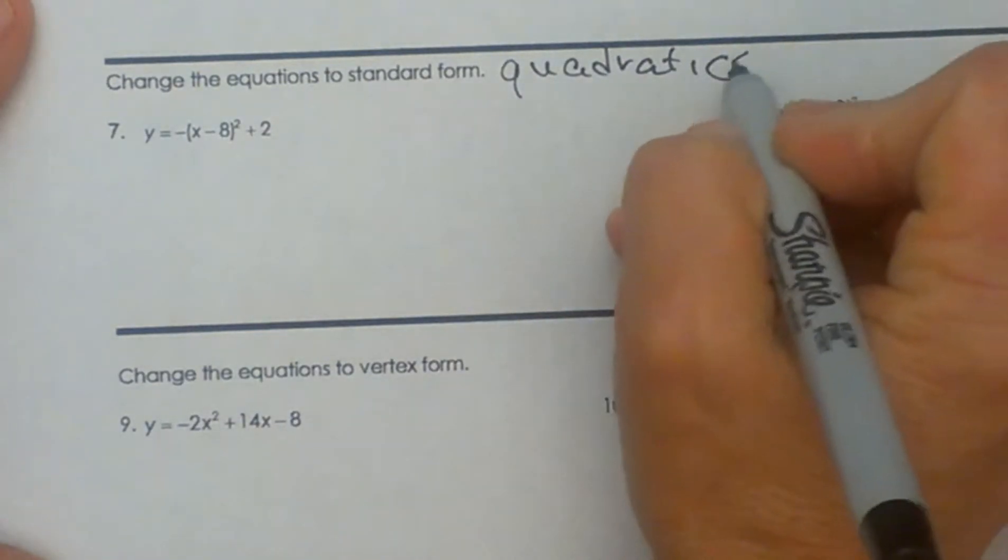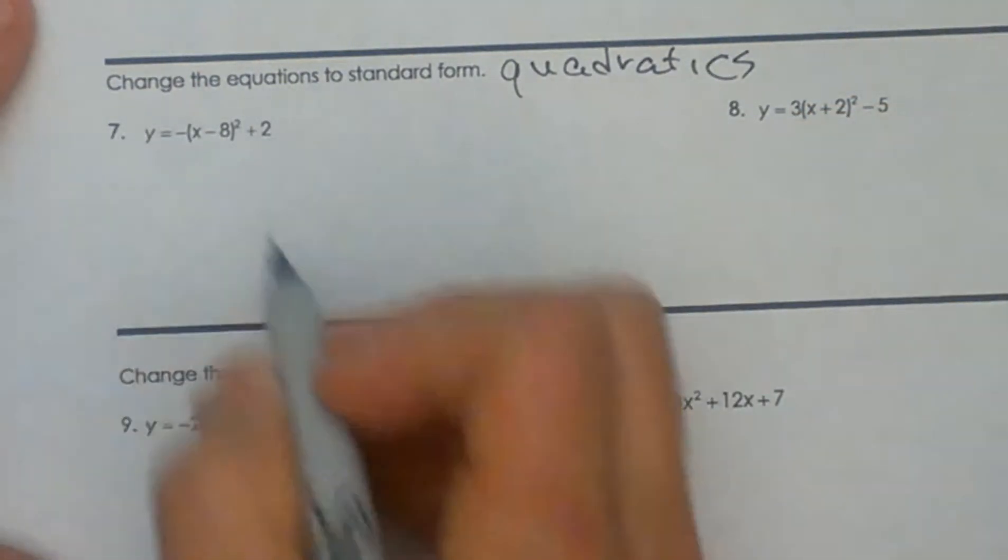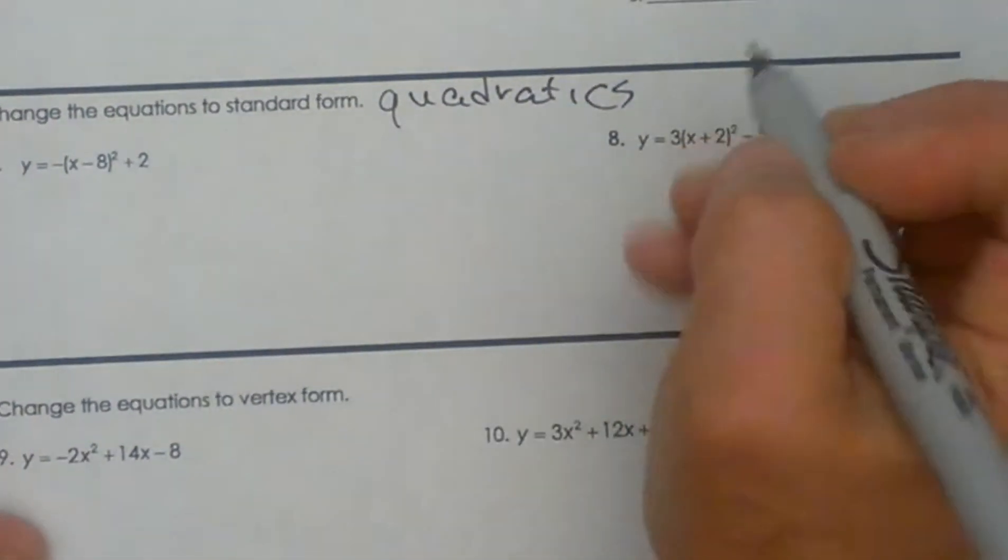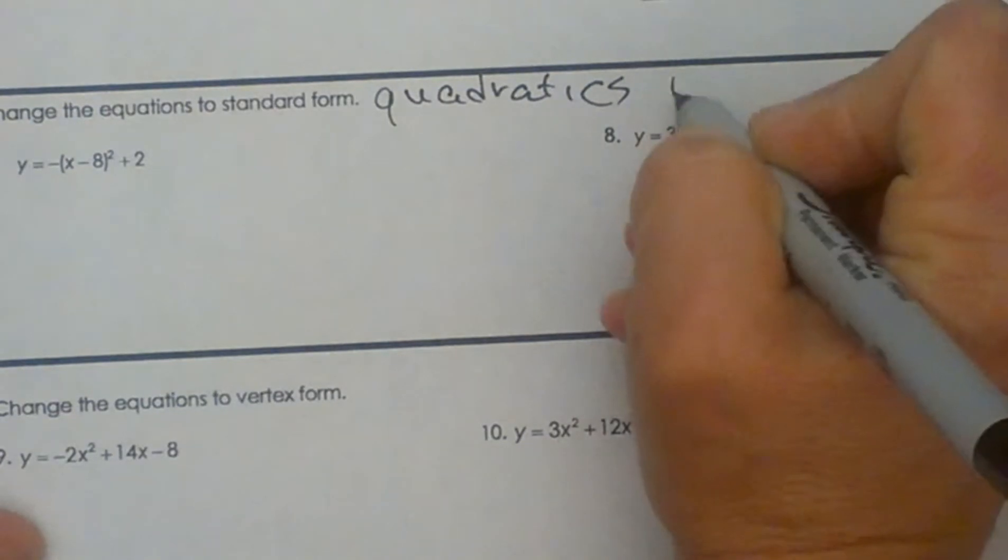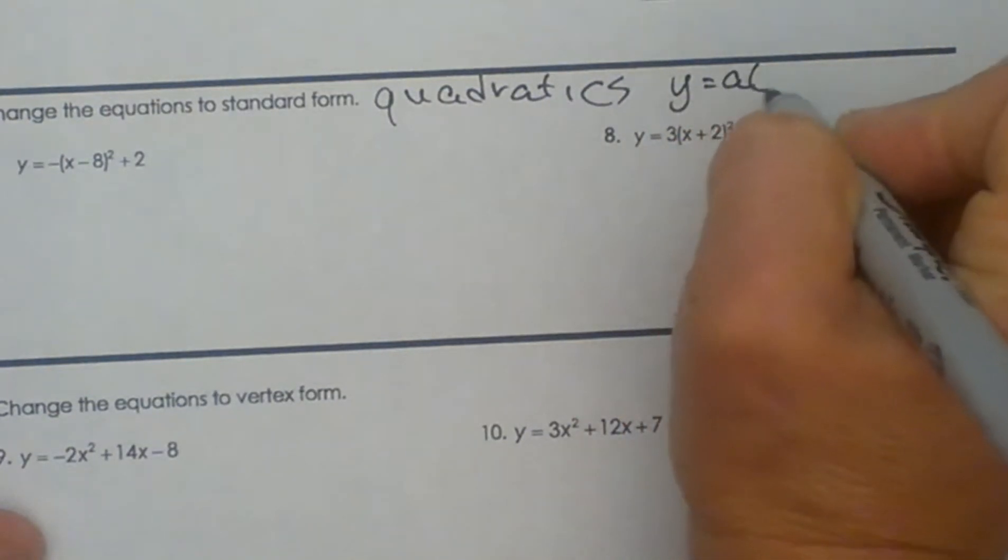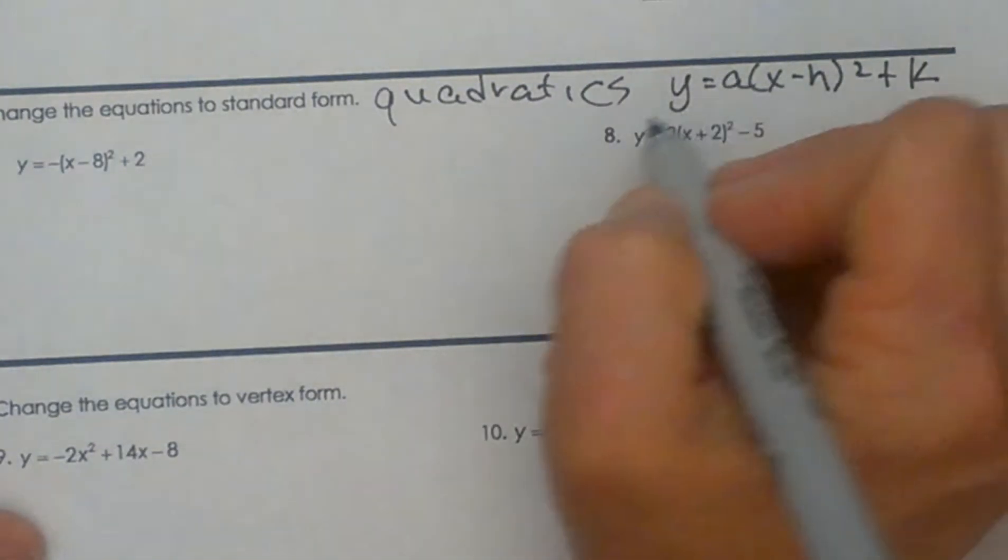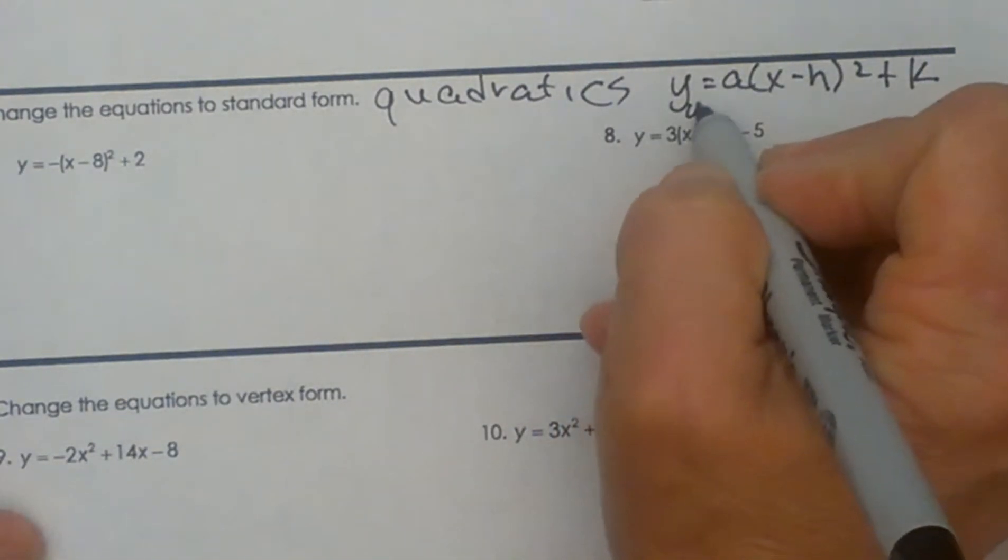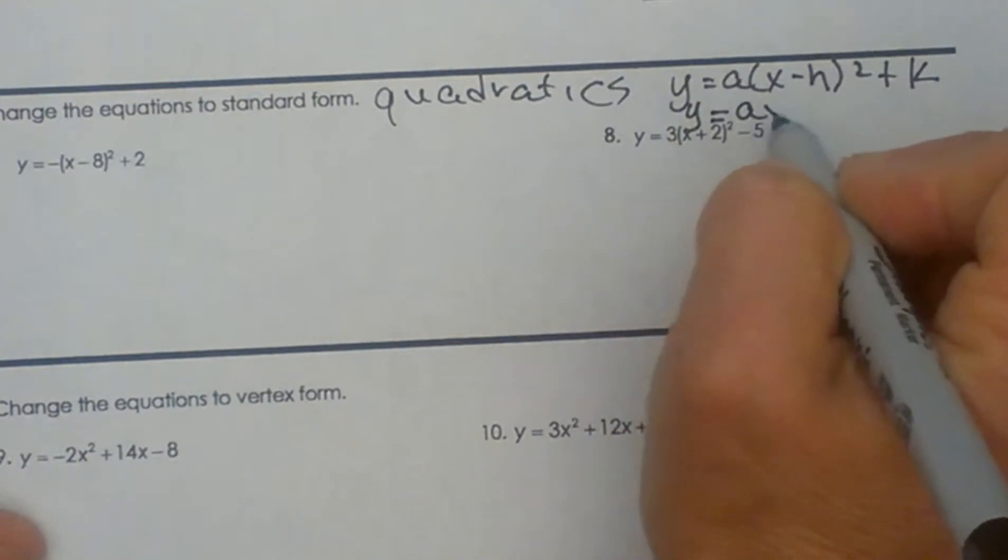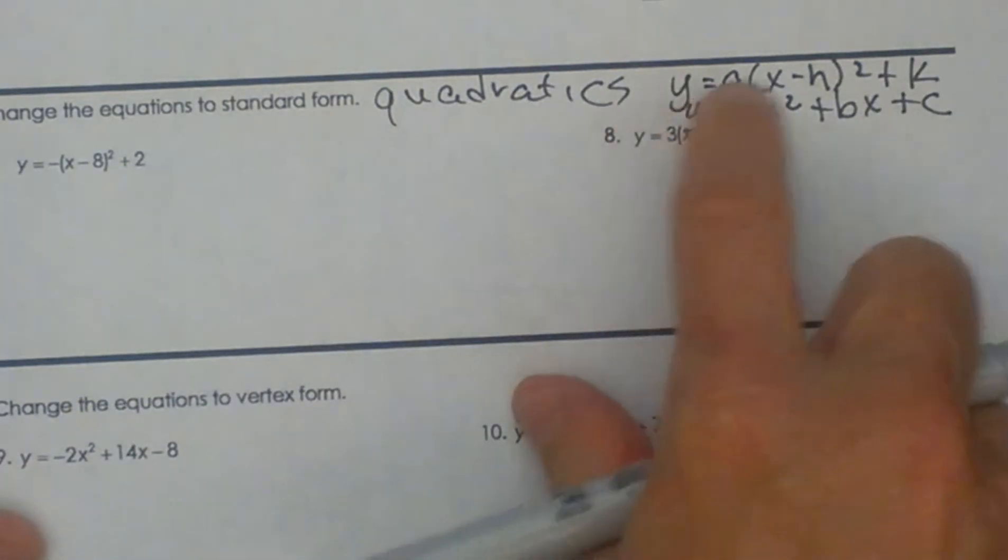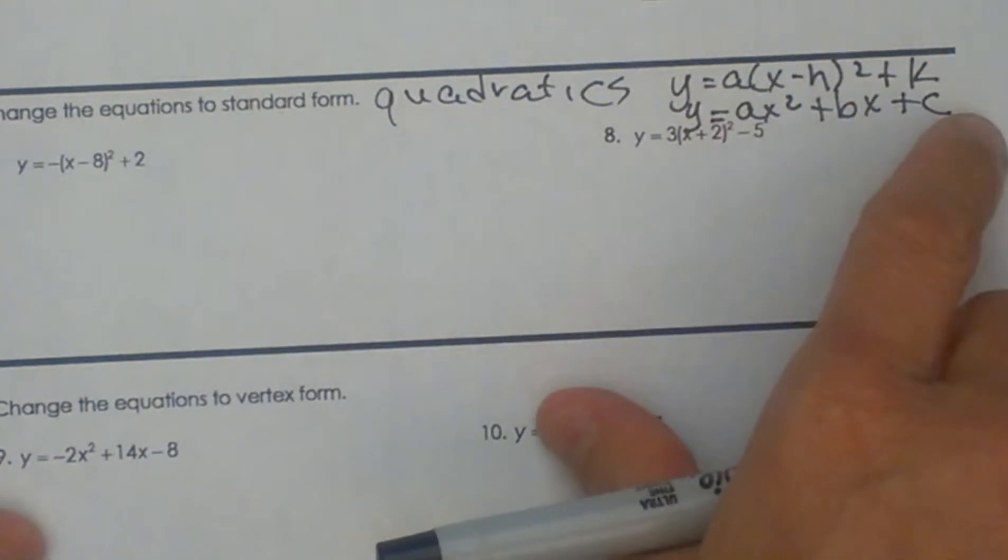I've given you an equation in vertex form, and we need to switch it to standard form. Let's first write the two forms down. The vertex form is y = a(x - h)² + k, and the standard form is y = ax² + bx + c. So we're converting from this form to this form.